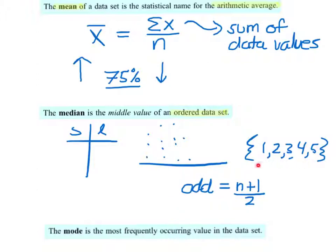In this example, I have five values. I add one to get six and divide by two, so I want the third data value in the ordered set, which is three.